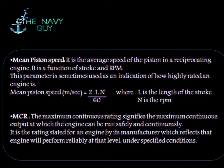MCR — Maximum Continuous Rating — signifies the maximum continuous output at which the engine can be run safely and continuously. It is the rating stated for an engine by its manufacturer, which reflects that the engine will perform reliably at that level under specified conditions.